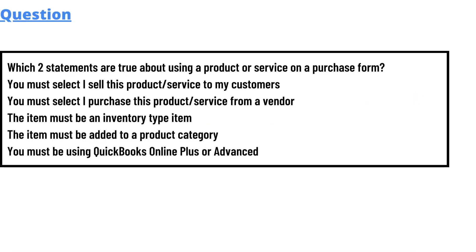Today's question is: which two statements are true about using a product or service on a purchase form? The options are: you must select to sell this product or service to my customers; you must select to purchase this product or service from a vendor; the item must be an inventory type item; the item must be added to a product category; and you must be using QuickBooks Online Plus or Advanced.